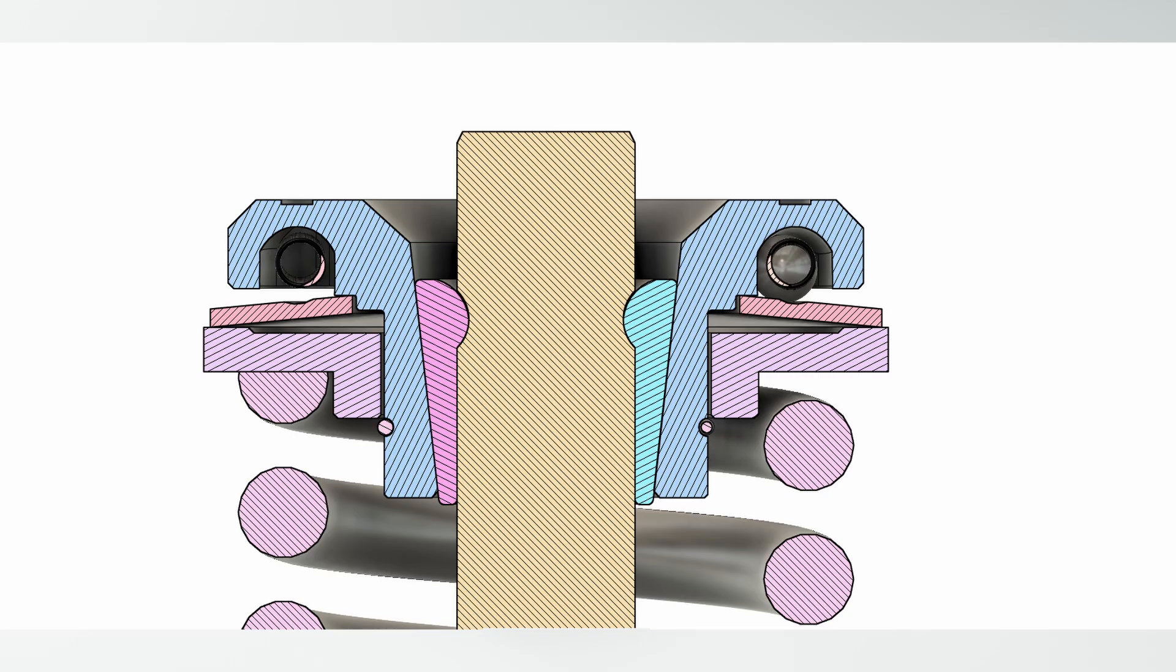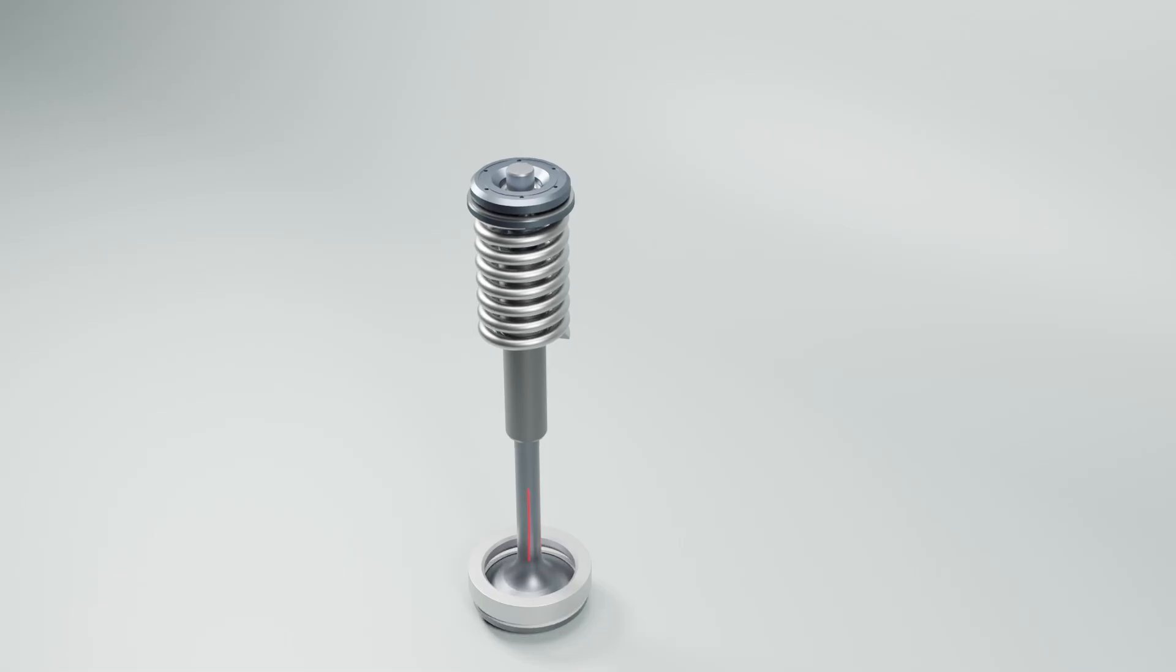As the spring exerts upward force on the retainer, the tapered bore of rotocap body forces the cotters to hold valve in place with friction. Thus as the rotocap body rotates, cotters and valve rotate along with it.